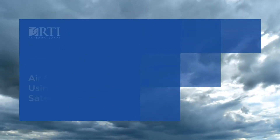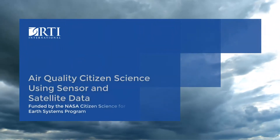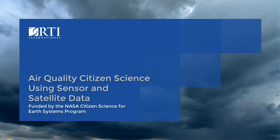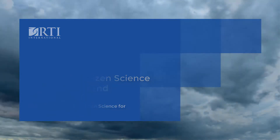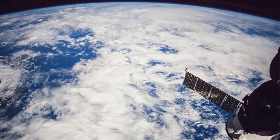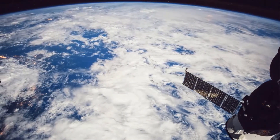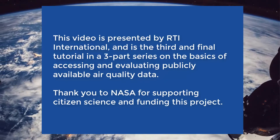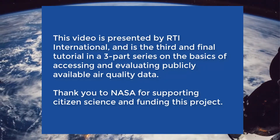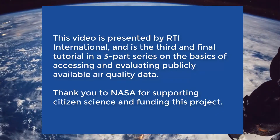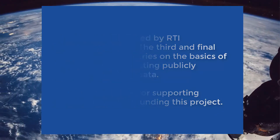Welcome to this tutorial on exploring your local and regional air quality using both sensor and satellite data. We hope this video will give you the tools needed to access data and understand your exposure to particle matter in the air. Using both satellite data and on-ground sensor data, you can begin to answer questions of how local events affect large regions. This video is presented by RTI International and is the third and final tutorial in a three-part series on the basics of accessing and evaluating publicly available air quality data. Thank you to NASA for supporting citizen science and funding this project.